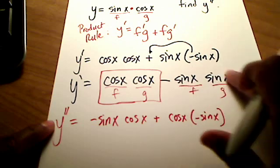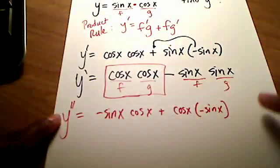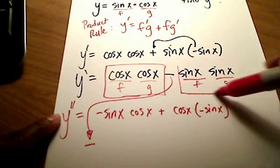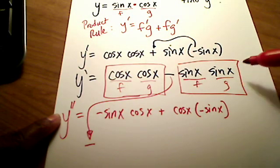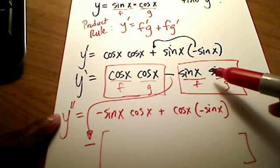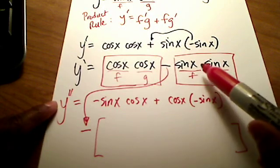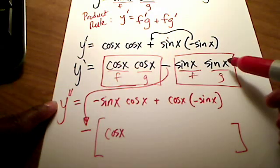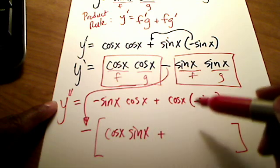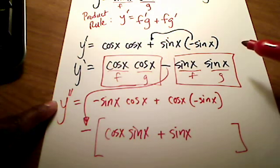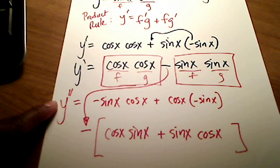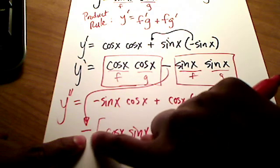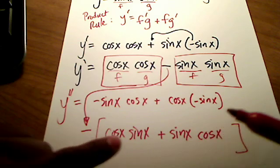Now let's find the derivative of the second term. There's a minus sign in between that carries down. I'll wrap the second product in brackets. Concentrating on sine x times sine x: f prime, the derivative of sine is cosine x, times g, which is sine x, plus f, which is sine x, times g prime, which is cosine x. The minus sign applies to both of these terms inside the brackets — not just the first one, but both of them.